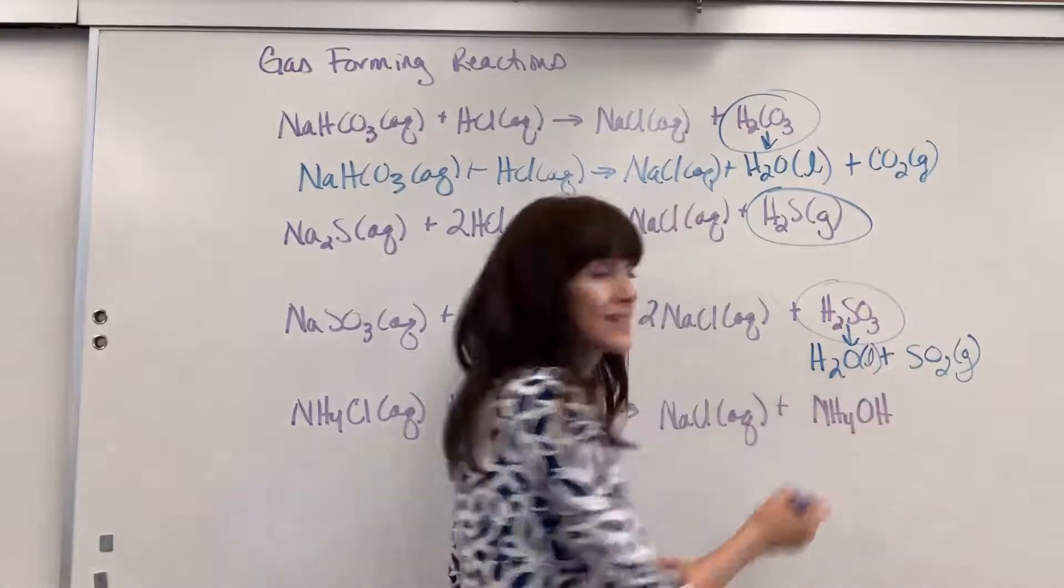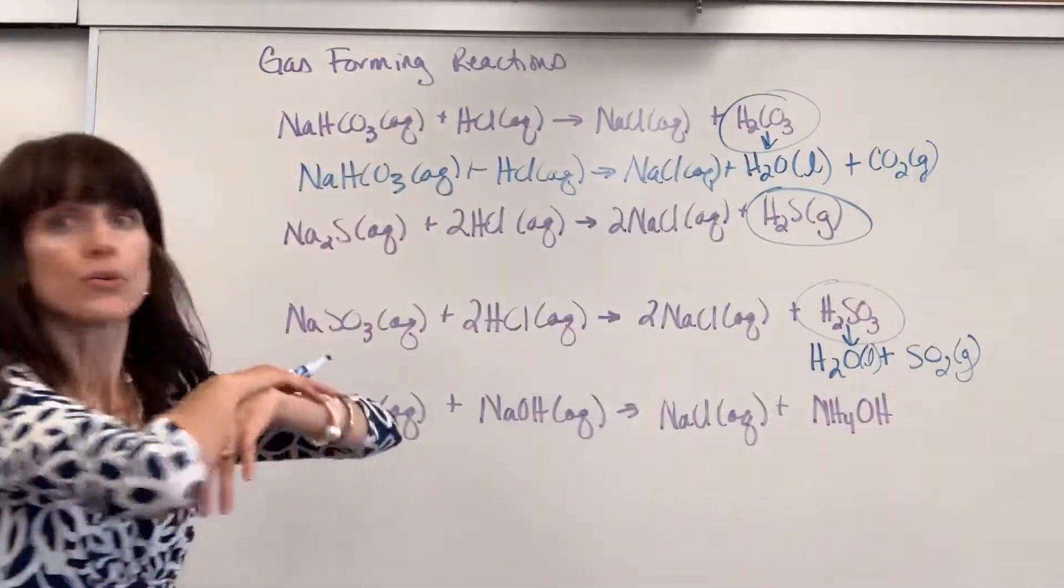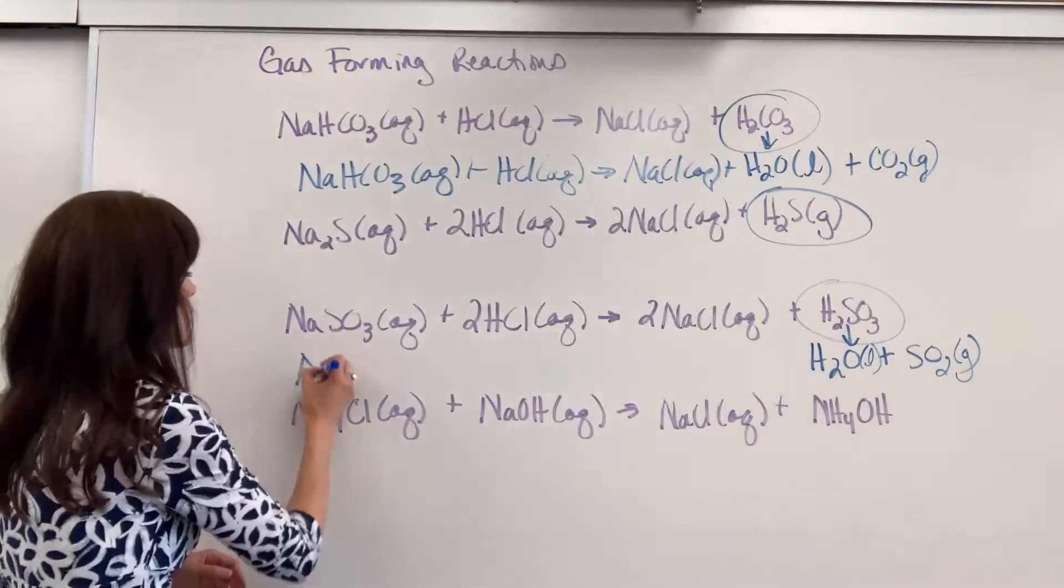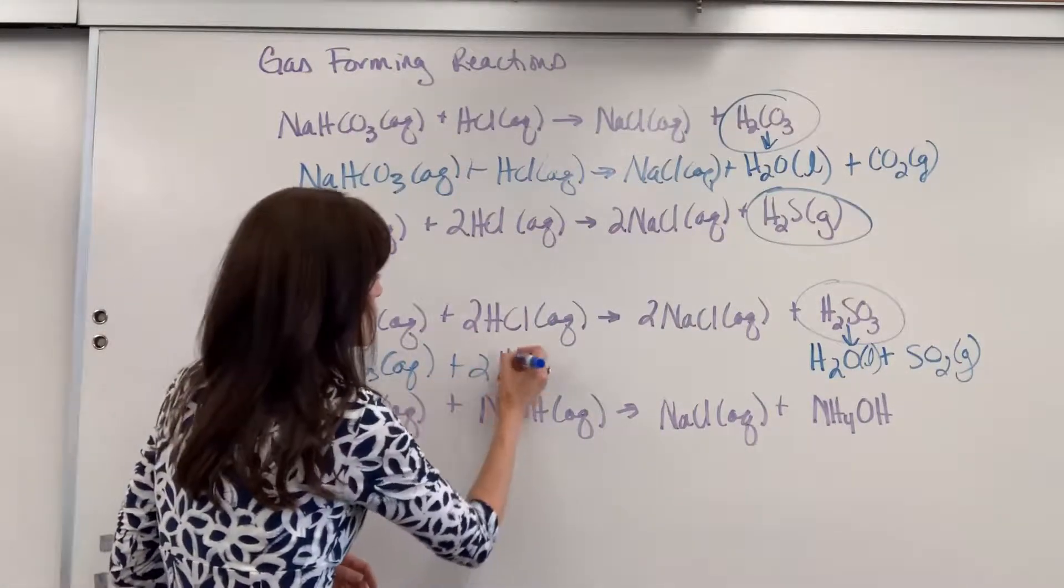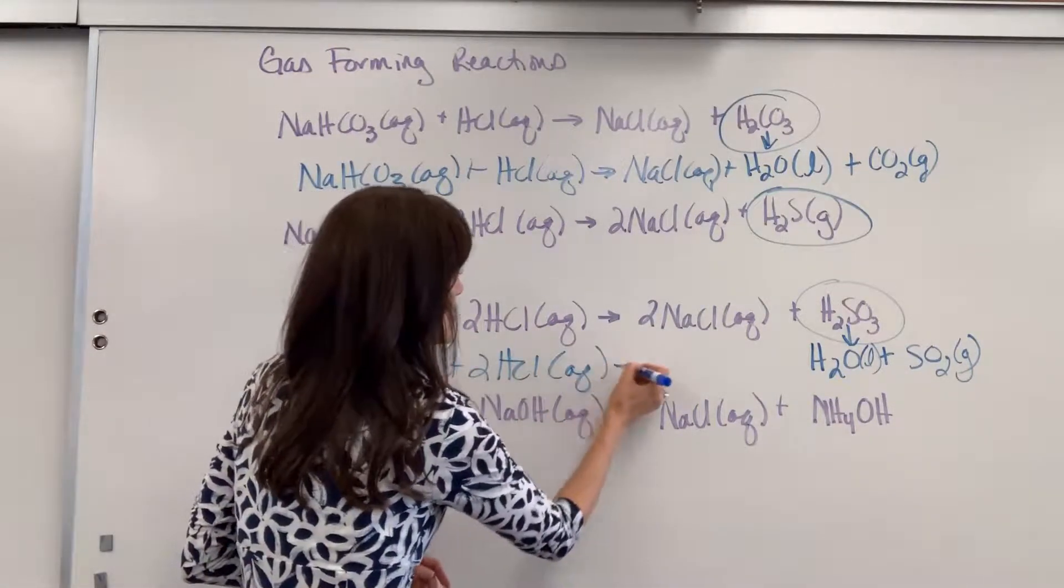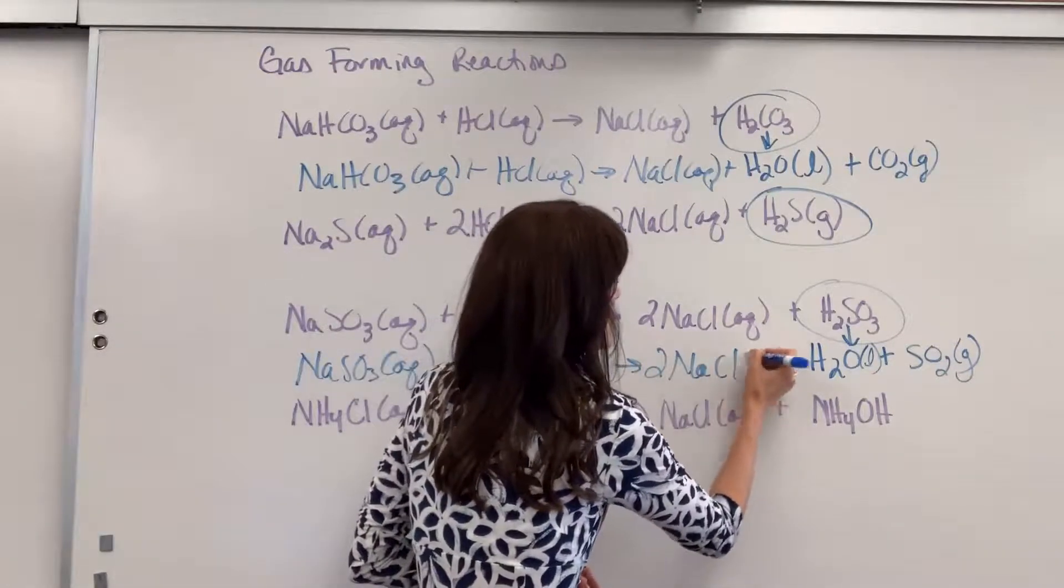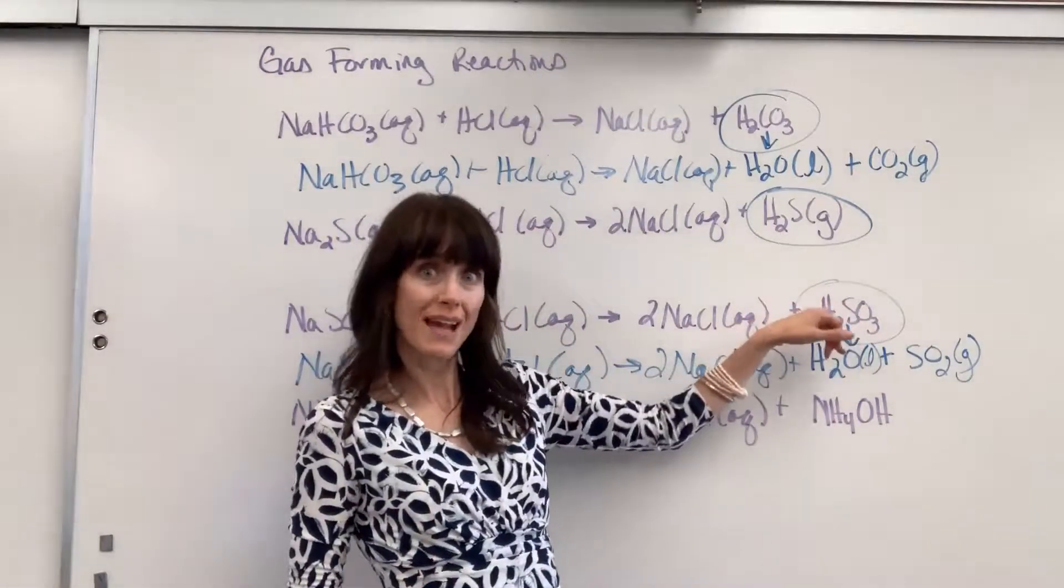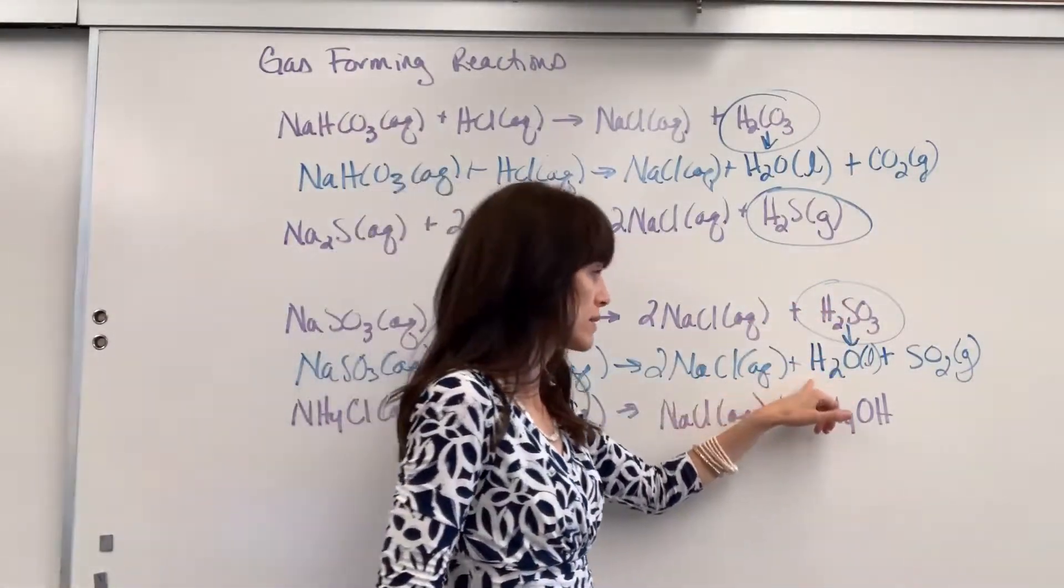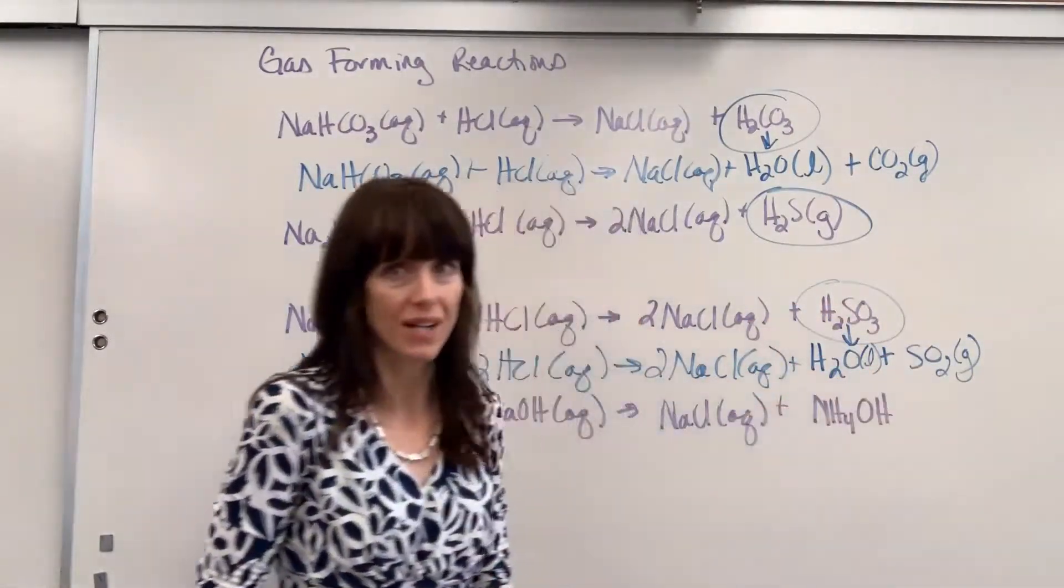So again, rewrite this whole thing. Sodium sulfite plus hydrochloric acid yields sodium chloride plus, here's the trick, change sulfurous acid to water, liquid, and sulfur dioxide gas.